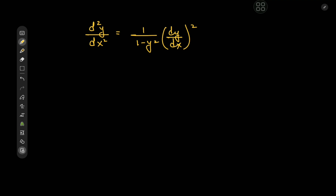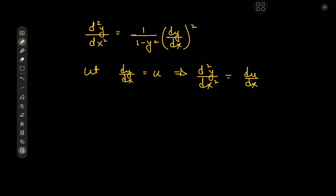Since we have this autonomous differential equation the transformation here is pretty standard. We're going to let dy/dx equal to u in an attempt to transform this into a first order differential equation. For the second derivative we have d squared y by dx squared equal to du/dx, however this would mean we have a differential equation in u, x, and y, which is not ideal, so we can use the chain rule to work around this by writing du/dy times dy/dx.